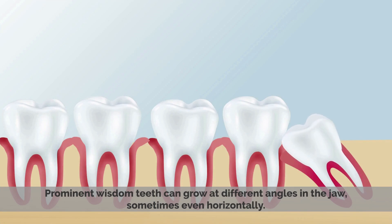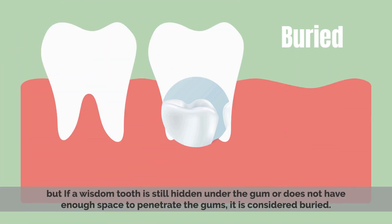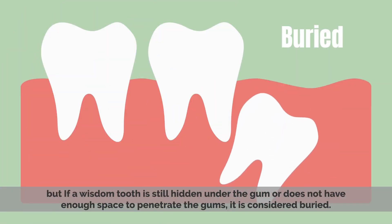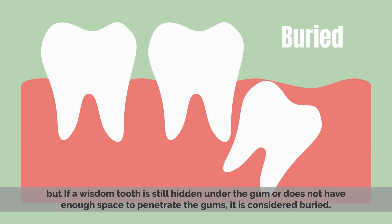Wisdom teeth can grow at different angles in the jaw, sometimes even horizontally. If a wisdom tooth is still hidden under the gum or does not have enough space to penetrate the gums, it is considered buried.